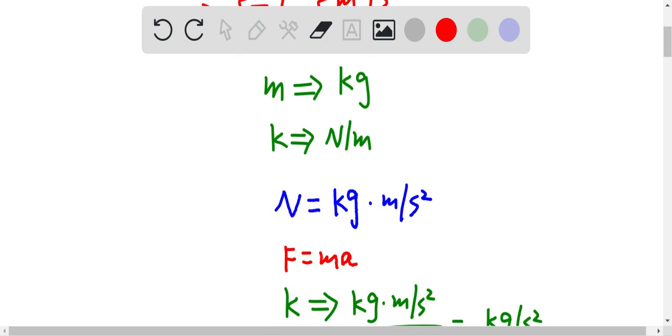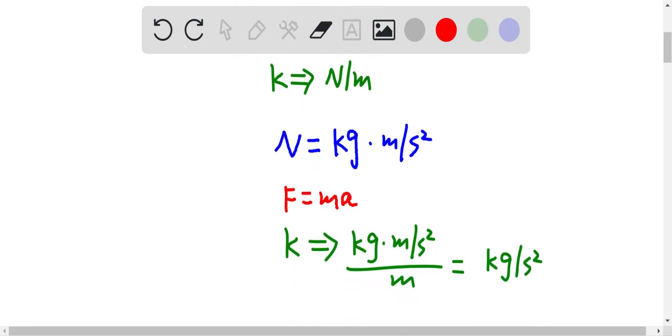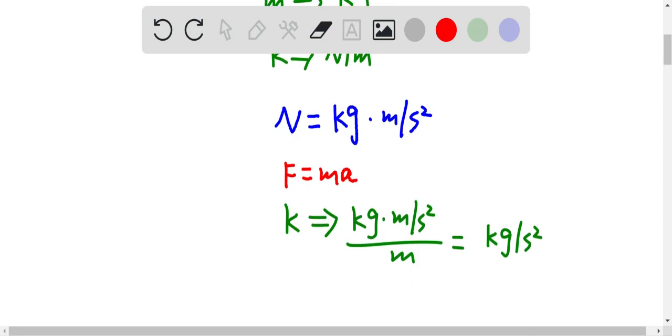Because force is equal to ma, therefore the spring constant unit is simply equal to kilogram per second squared.